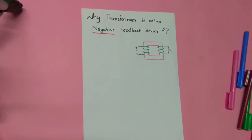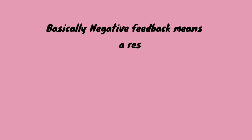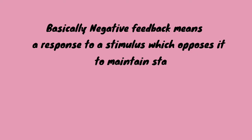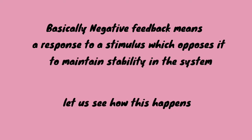Hello everyone, welcome to my YouTube channel. In this video we are going to discuss why a transformer is called a negative feedback device. In the last class we discussed why the transformer is called a phase shifting device, and now I'm doing this video on request. Basically, negative feedback means a response to a stimulus which opposes it to maintain stability in the system.